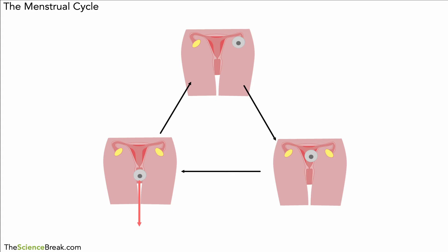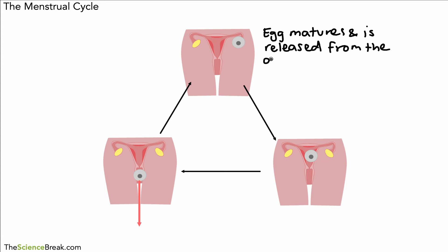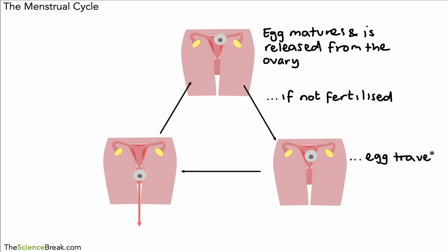We can summarize that on this slide here. Remember it's a cycle, so we're just going to start at the point where the egg matures and is released from an ovary, passes down through the oviduct into the womb or uterus, and if not fertilized — which is the vast majority of the time — it will travel to the womb. The egg then travels to the womb and after a short period of time is removed from the body.